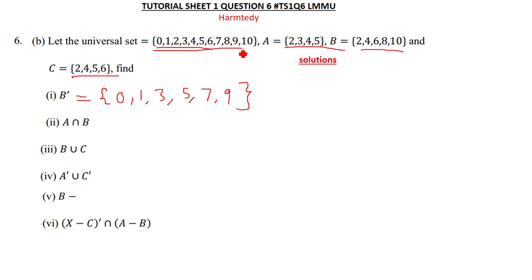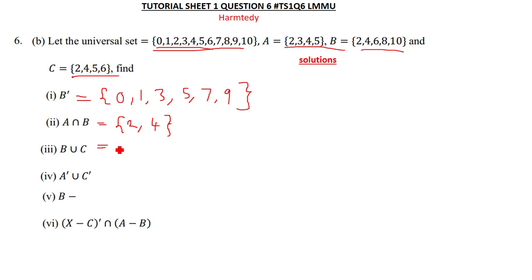For A intersection B, we find the common elements between A and B, which gives us {2, 4}. For B union C, we combine both sets B and C, giving us {2, 4, 5, 6, 8, 10}.